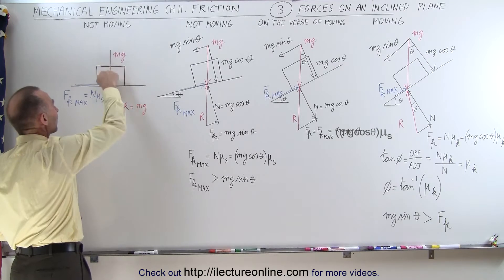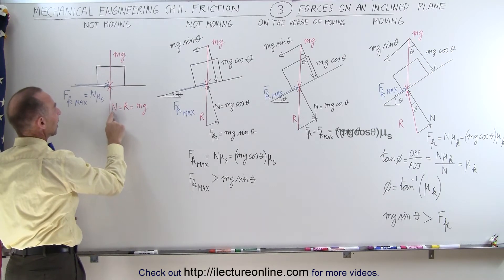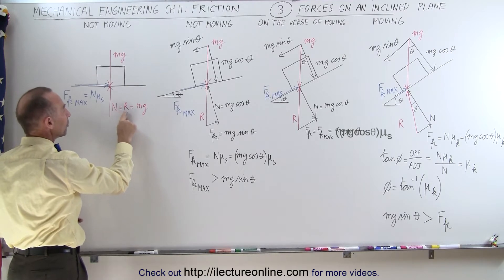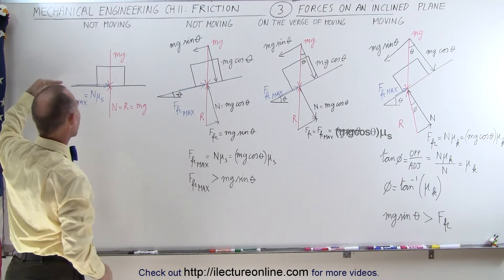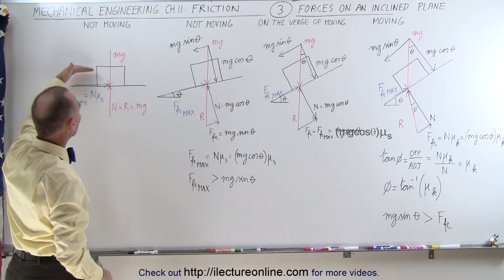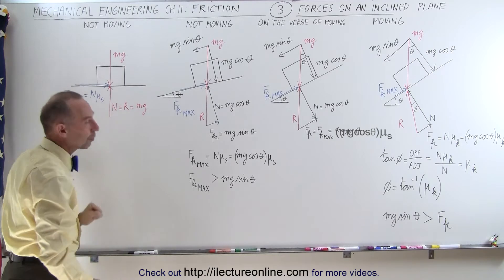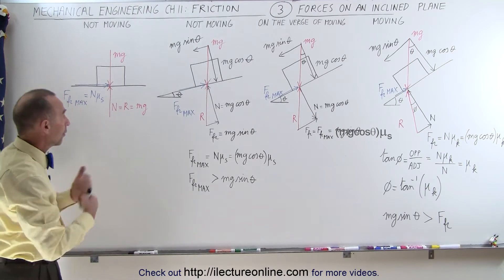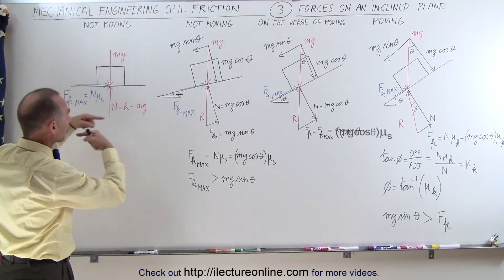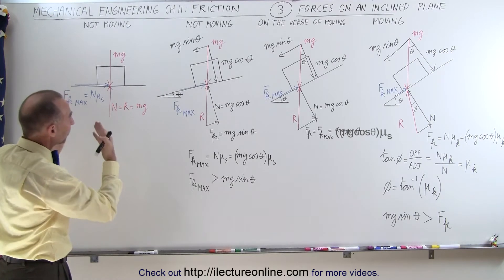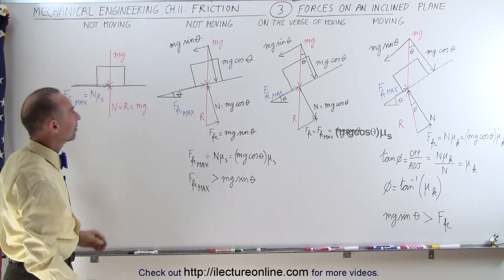We simply have the weight of the block pushing down and the normal force pushing back. In this case, the normal force is equal to the reaction force, which is equal to the weight of the block. We have a maximum friction force between the block and the surface equal to the normal force times the coefficient of static friction. However, since there are no forces acting in the horizontal direction, there is no friction force in this case — the block is not moving.